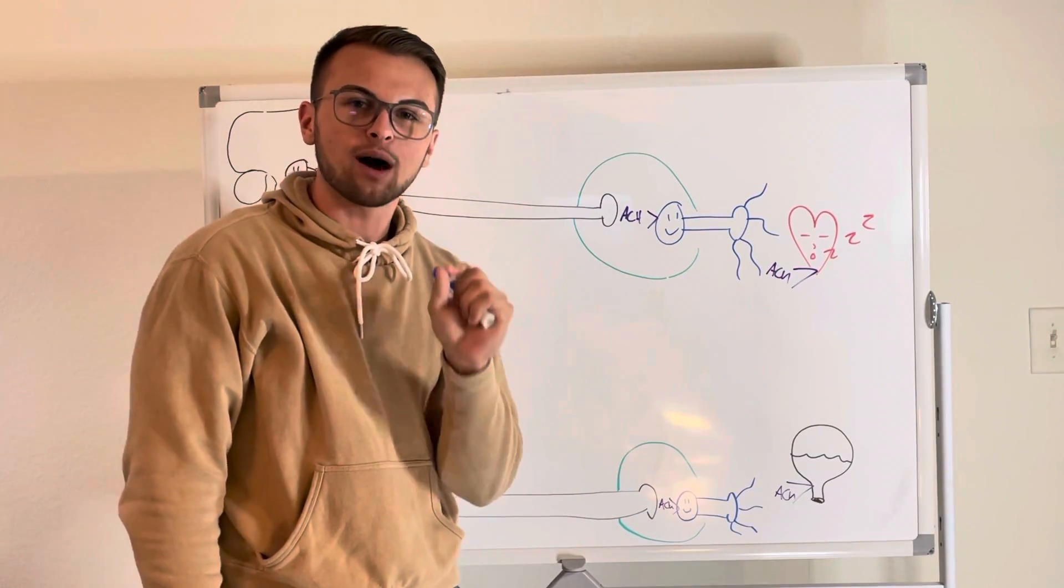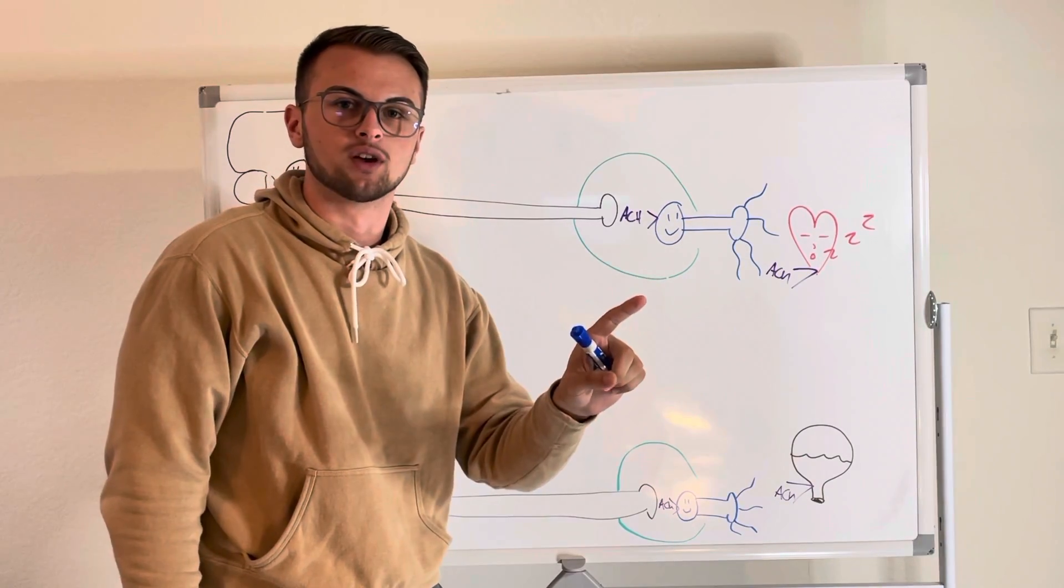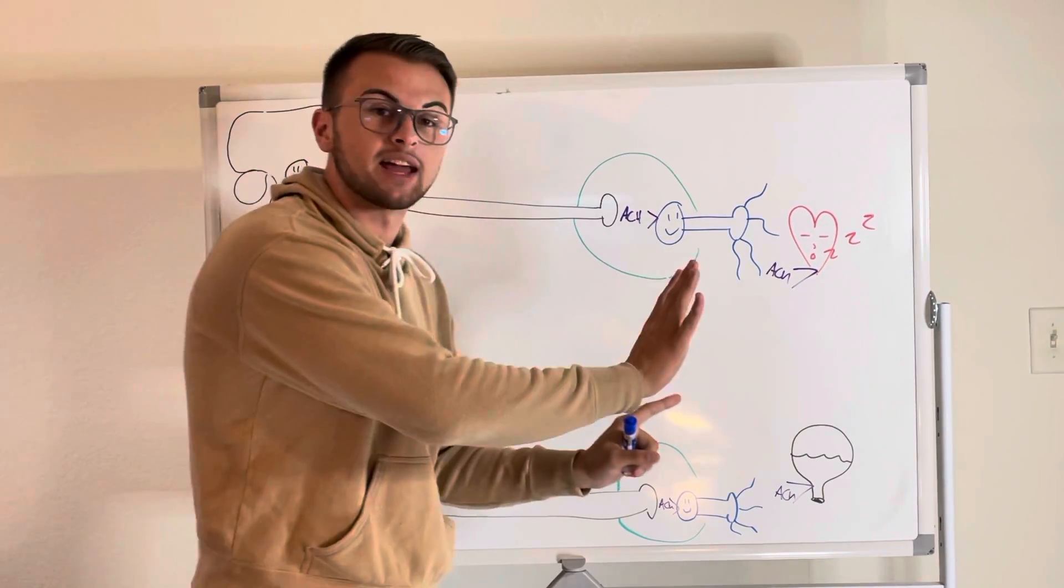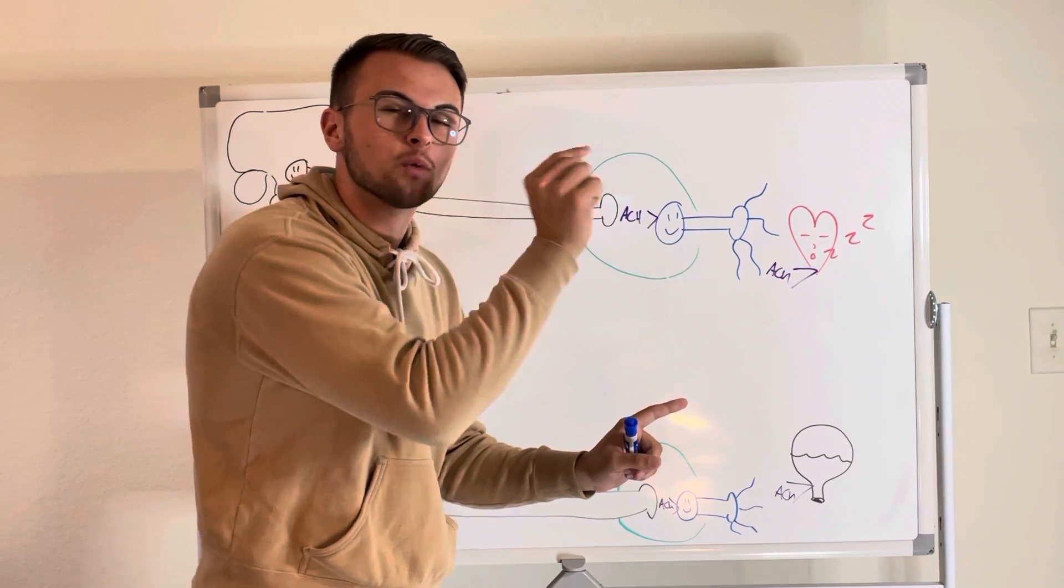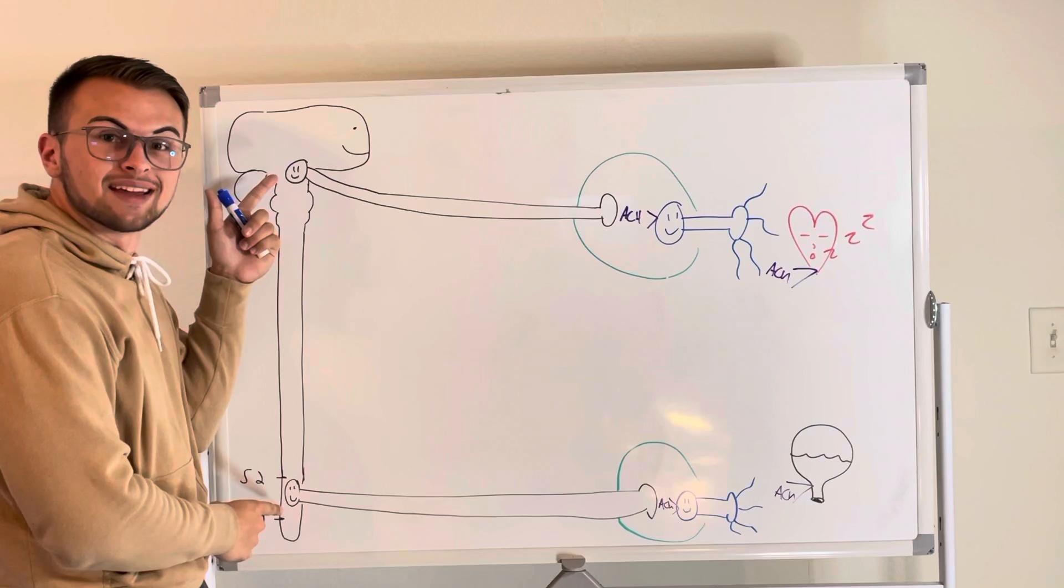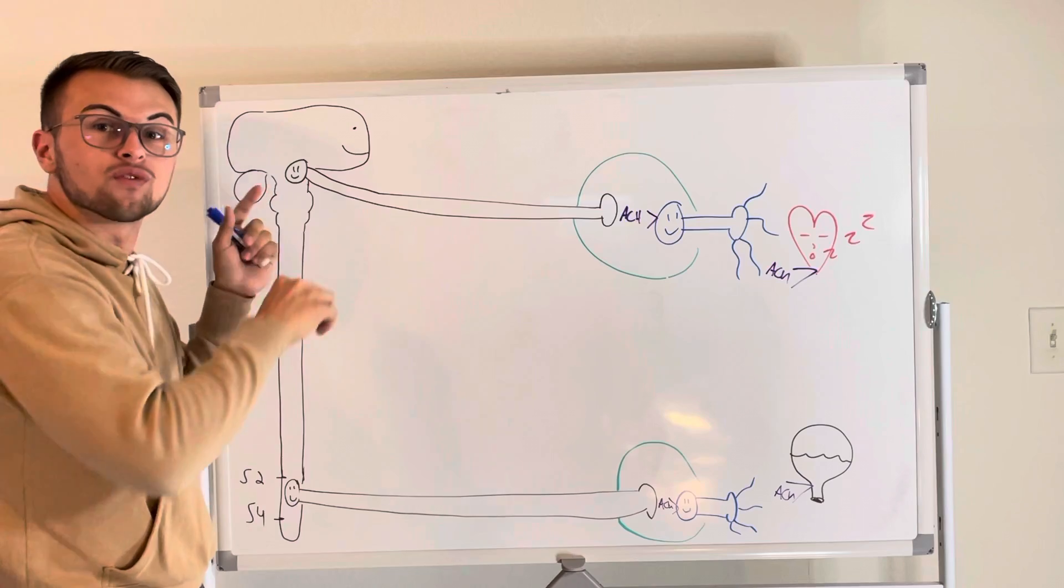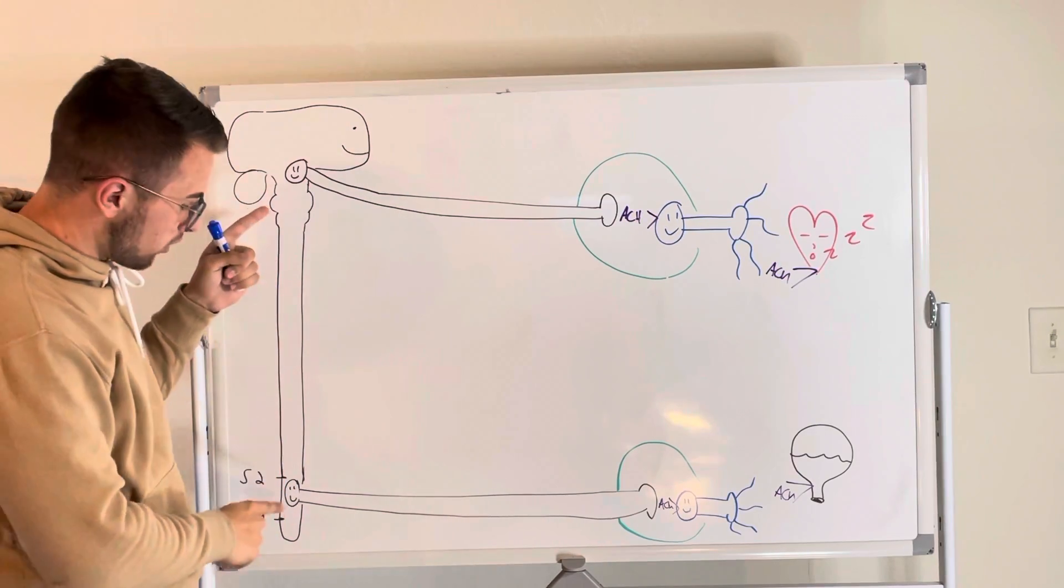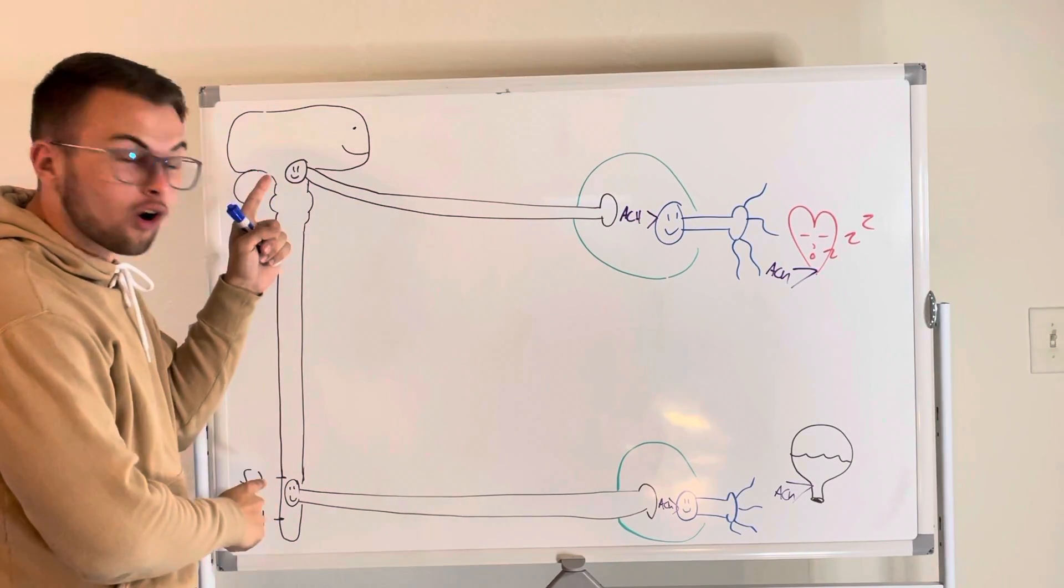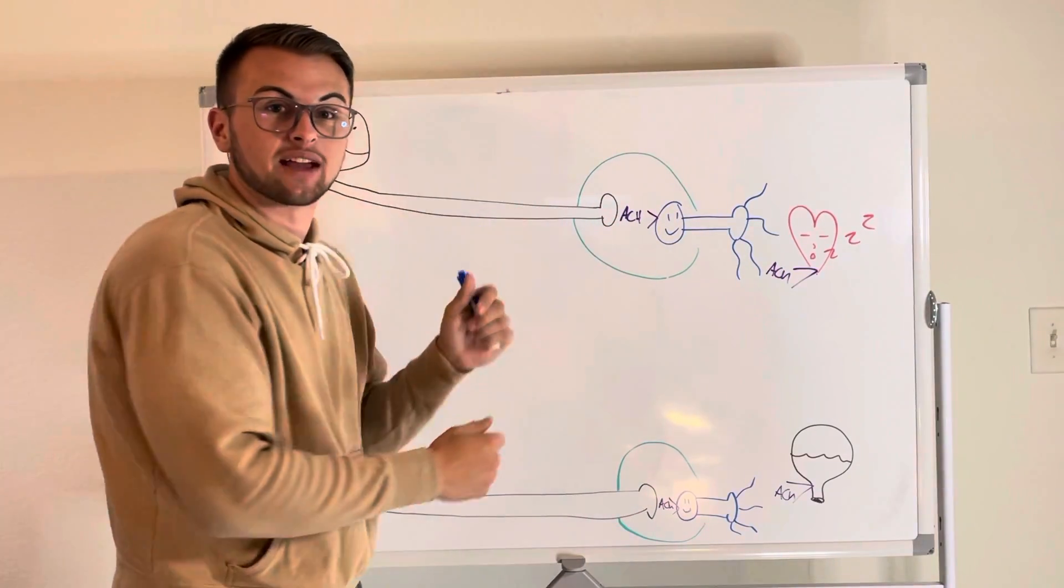Now how does the parasympathetic nervous system send its messages? Well we know that it follows the same chain as the sympathetic system with just a little twist. So these preganglionic neurons in the sacral spinal cord or those that use the cranial nerves will fire action potentials from their cell bodies all the way down their long axons and into the ganglia.